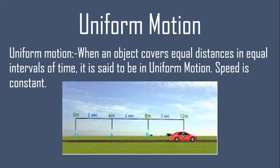For example: zero seconds mein usne zero meter cover kiya, two seconds mein four meter, four seconds mein eight meter, ten seconds mein twelve meter. Yahan equal interval of time mein equal distance travel ho raha hai — so this is uniform motion.